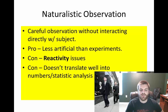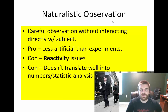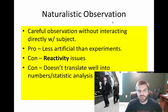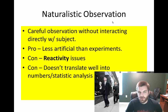The first major type is naturalistic observation. This is basically when you observe something or someone — some type of organism, it could be an animal or human — in their natural environment. You are carefully observing them with the intent of not actually letting them know that you're watching. One of the major benefits is that, if done properly, it is less artificial than the experiment, and you're not really manipulating anything.